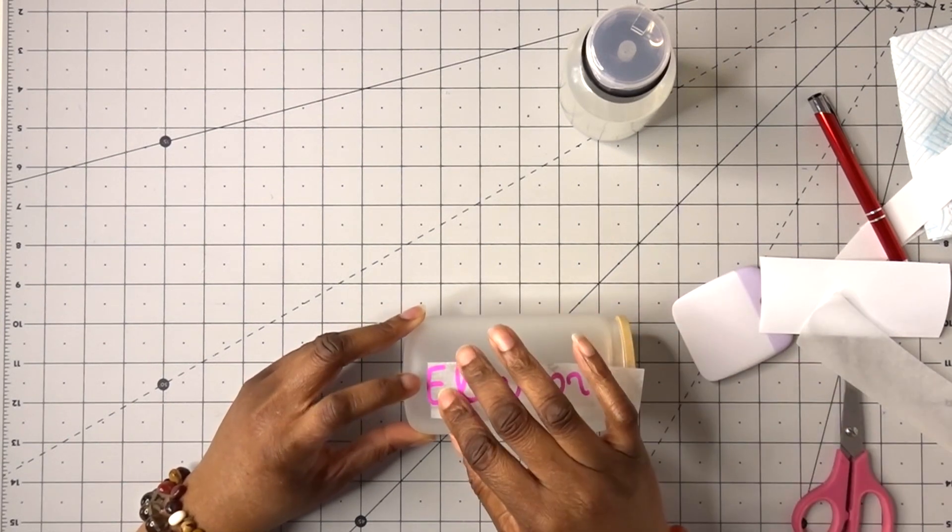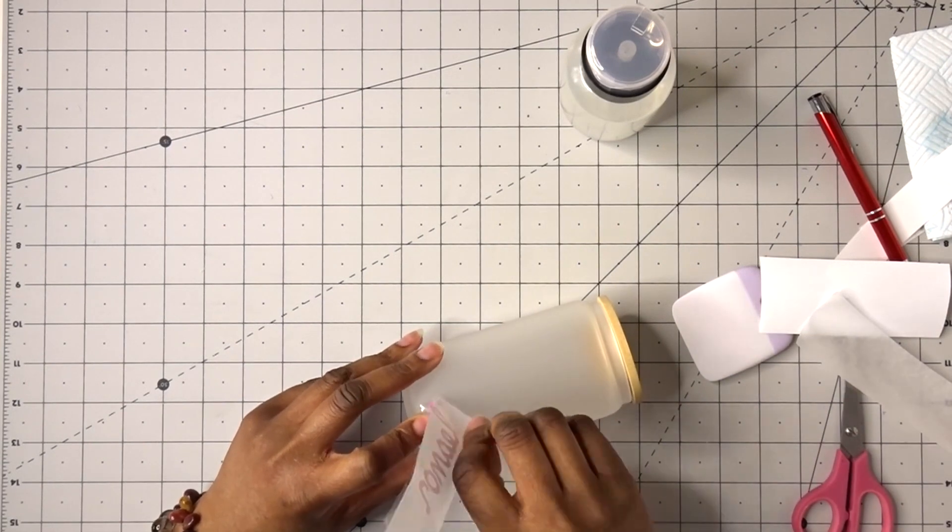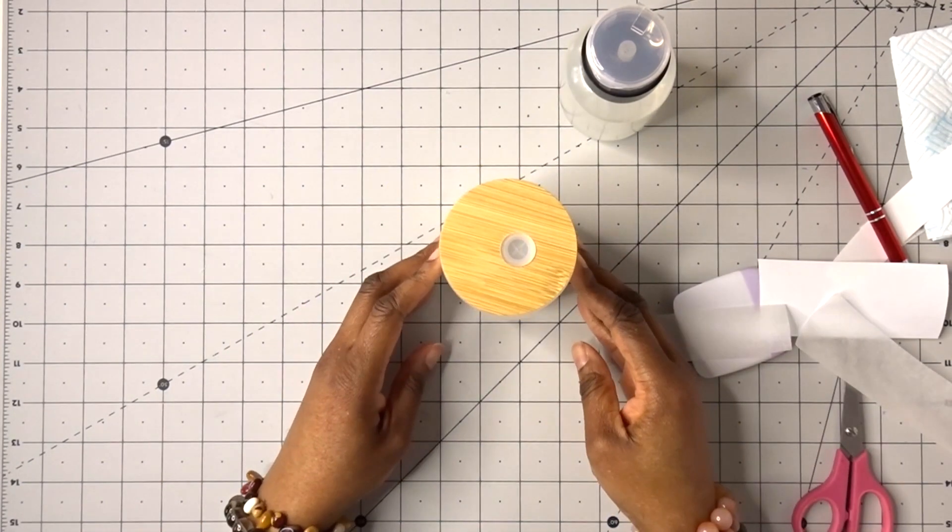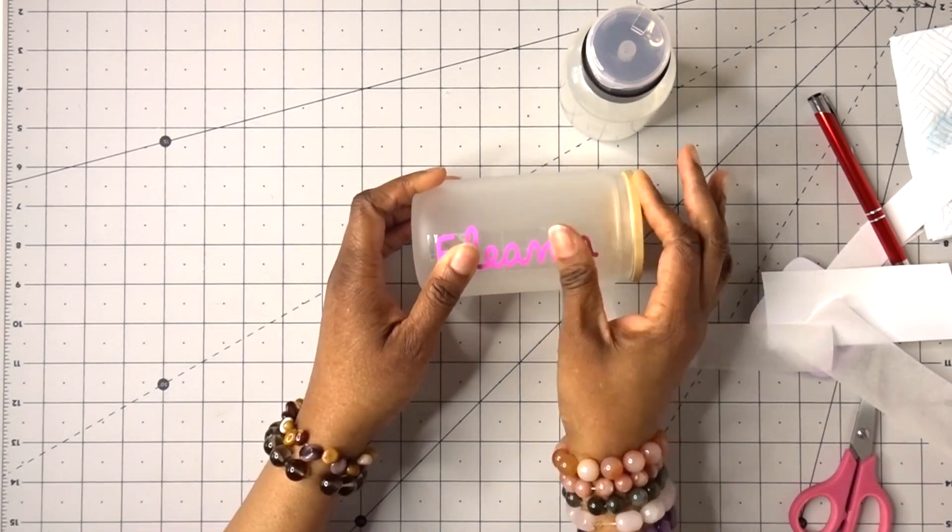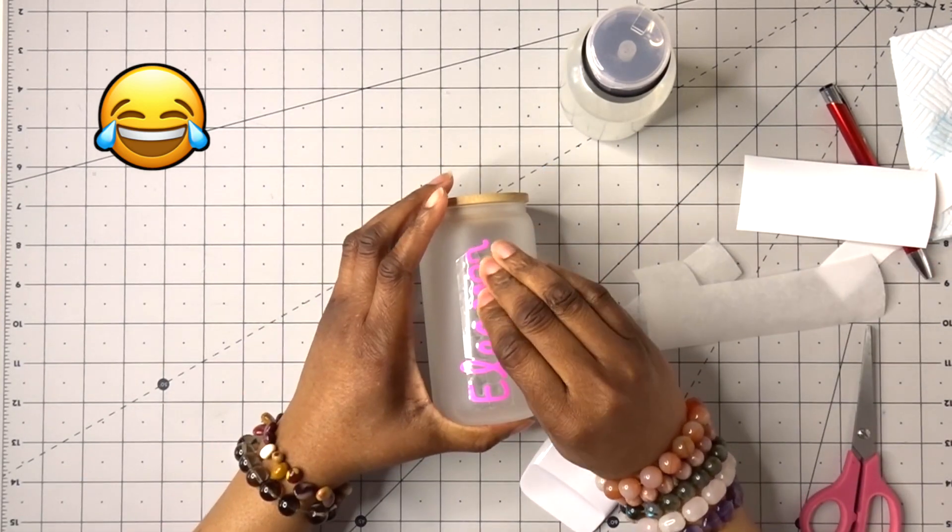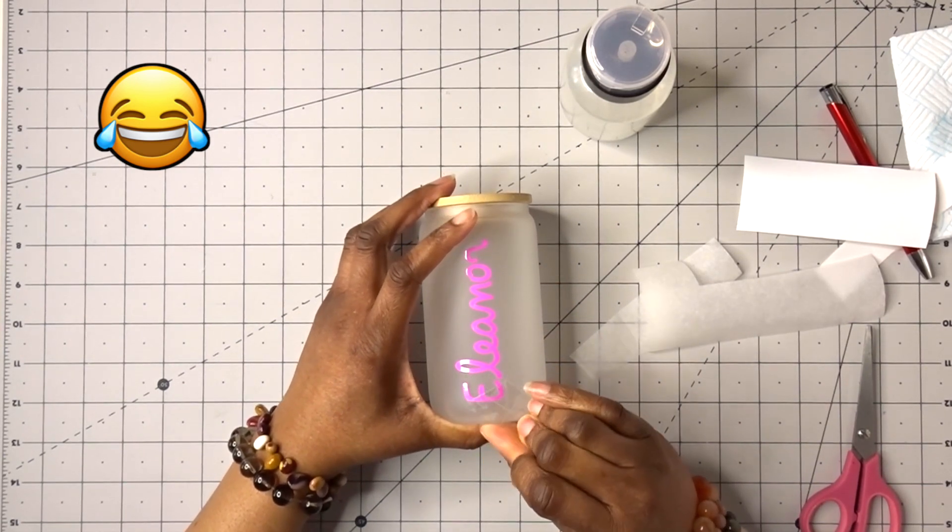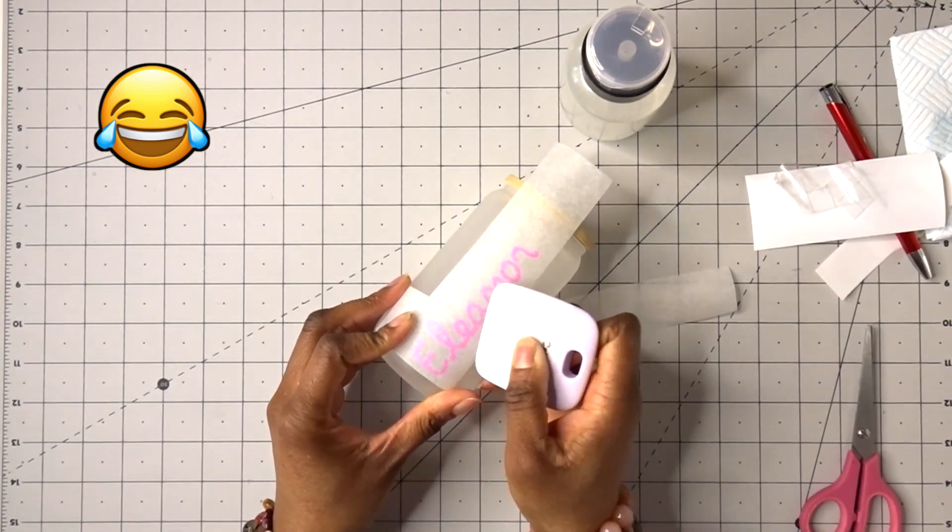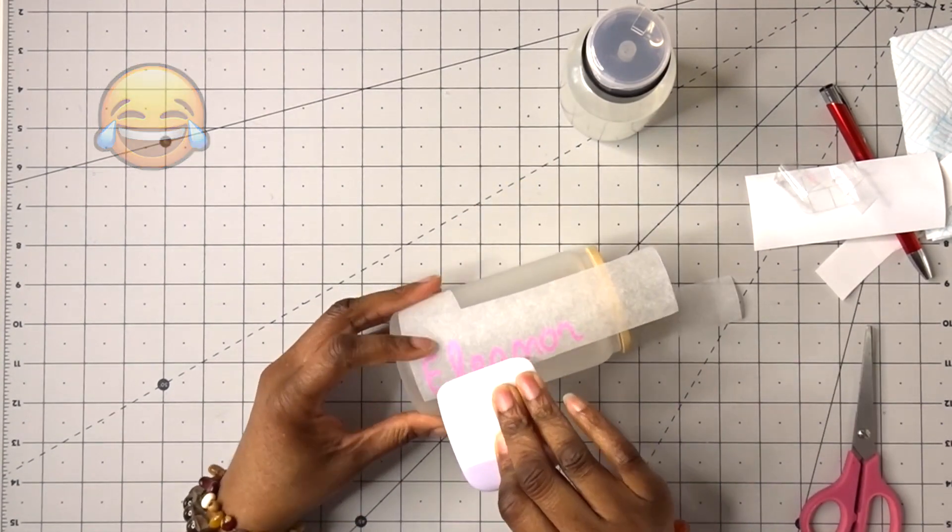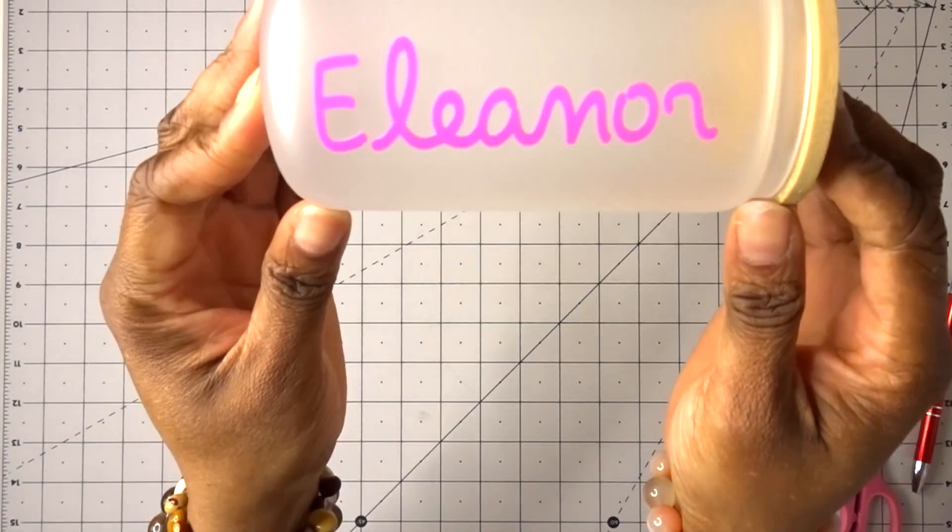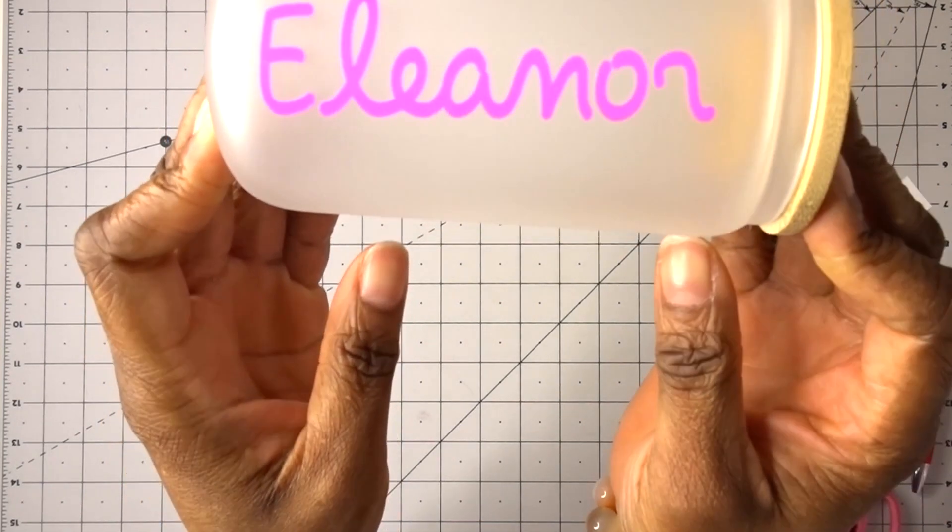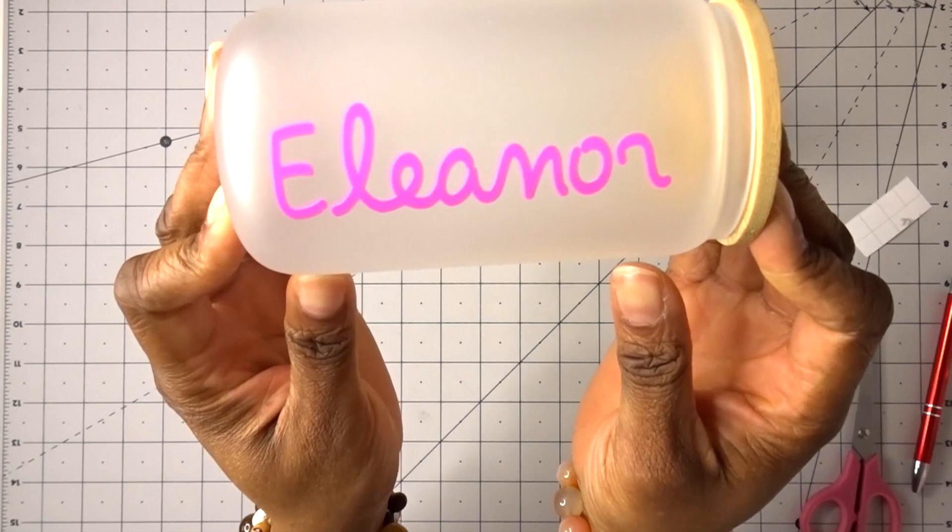However, this is a permanent vinyl and so some care instructions need to be given to the new owner. I have written up a really fun and Love Island inspired care instructions which is: Hi, I'm frosted drinkware glass and I'm coupled up with Eleanor. Although I'm dishwasher safe, Eleanor is not. Do not place me in the dishwasher or stand me in water, doing so may cause Eleanor to recouple with the dishwasher or sink. So this is what it's looking like. I think it looks really lovely, it looks just like the Love Island merch. It is beautiful and I hope Eleanor loves it.